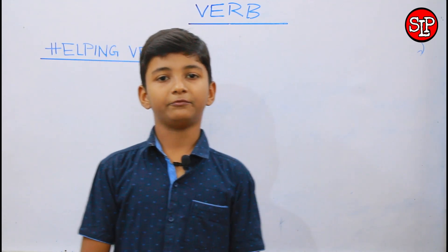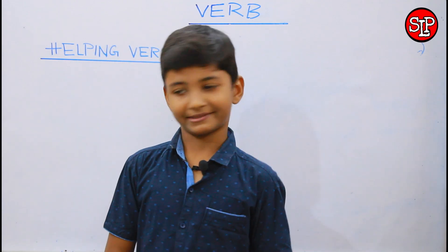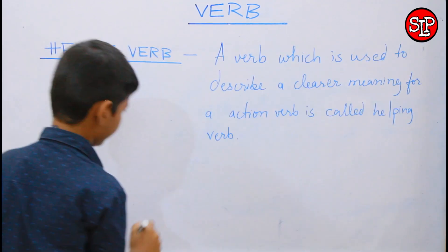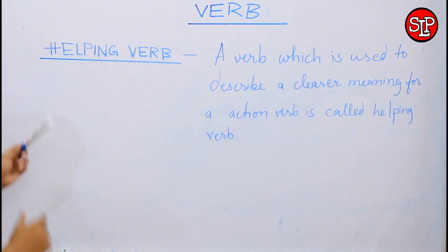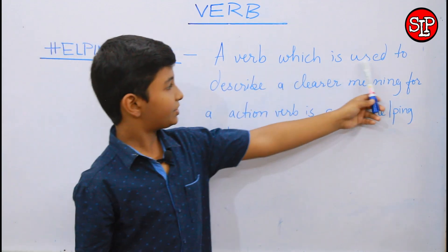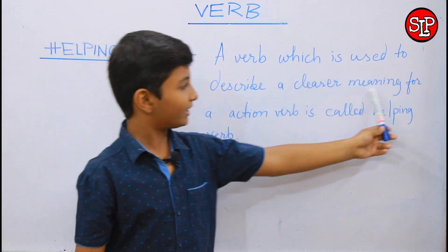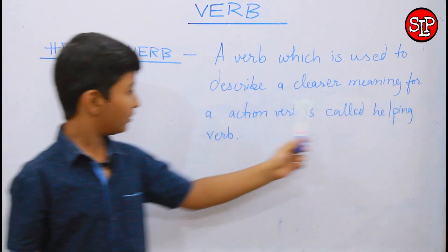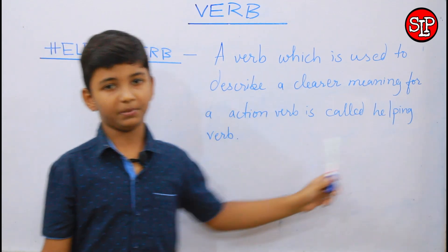Jaise: is, am, are, will, were, was, shall, etc. So, the definition of helping verb is: a verb which is used to give a clearer meaning to an action verb is called a helping verb.